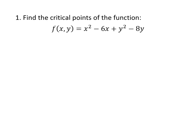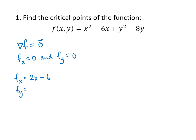A critical point is a place where the gradient of my function equals the zero vector — in other words, where the x partial derivative equals zero and where the y partial derivative equals zero. So we take our partial derivatives: f sub x in this case is 2x minus 6, f sub y is 2y minus 8, and then we just set them both equal to zero.